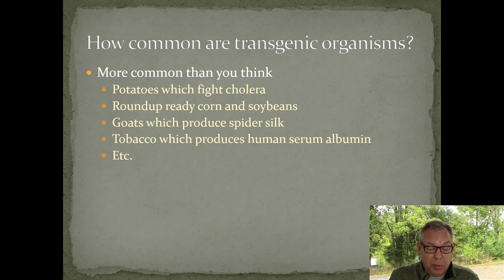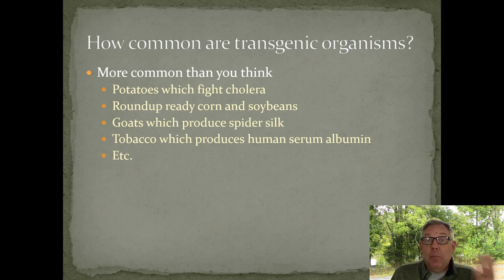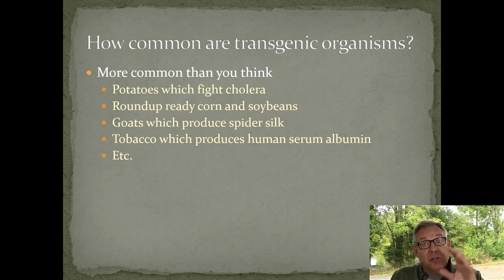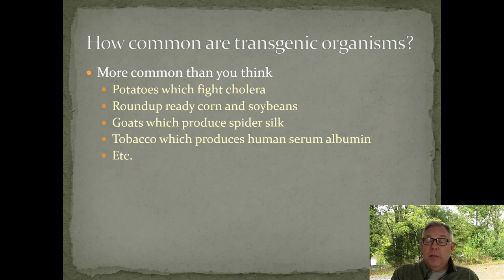There have been goats modified to produce spider silk - you put the silk gene from a spider into a goat and they can produce that silk in their milk, so you can mass produce silk a lot cheaper and easier. Tobacco plants have been modified to produce human serum albumin, a very important protein in human blood, and to produce mass quantities of this important medical protein you can splice this gene into a tobacco plant and harvest it. These are all good examples of GMOs - this is a vastly growing area of biology.